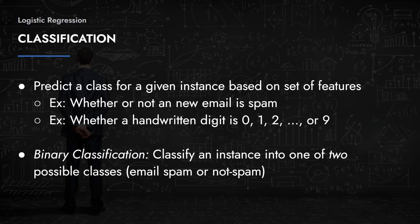Let's define classification. We defined this in the introduction to machine learning section, but since we're finally getting hands-on with classification, let's define it again. Classification is where you predict a class from a given instance based on a set of features. An example would be predicting whether an email is spam or not.